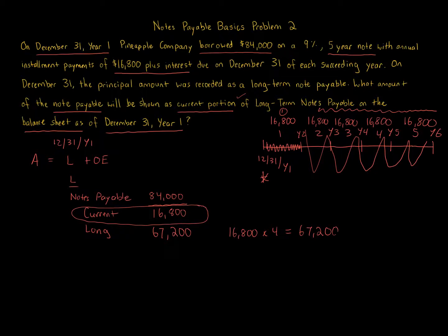You could also be asked in the same question: what is the long-term portion on this date? It would be $67,200. You can go even further — at the end of Year 2, December 31st Year 2, what portion is current and what portion is long-term? One payment would have been paid off — the $16,800 due on December 31st, Year 2 — so there's only $67,200 left. $16,800 of that would be current, and three payments ($16,800 times three) would be long-term. You could keep going for each year.